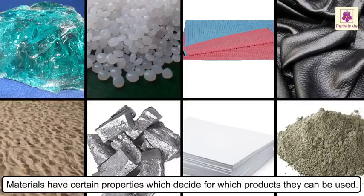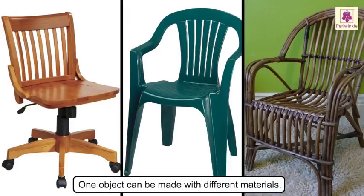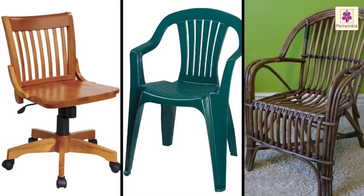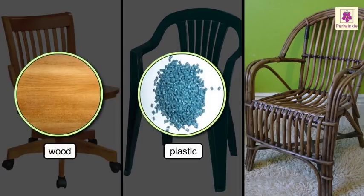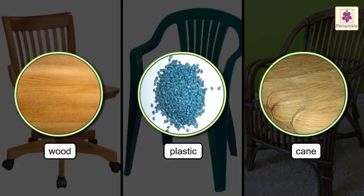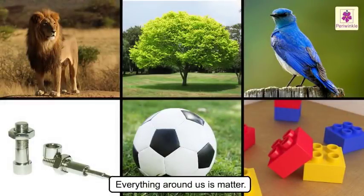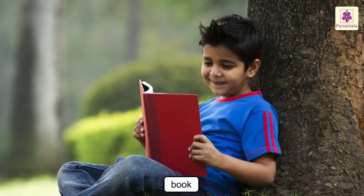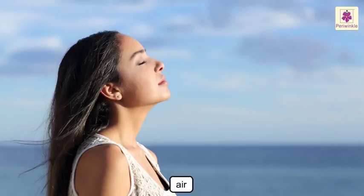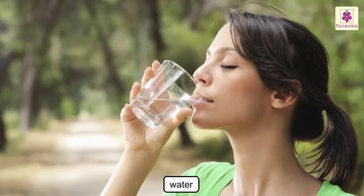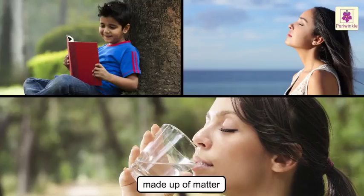Materials have certain properties which decide for which products they can be used. Often one object can be made with different materials — for example, a chair could be made of wood, plastic, or cane. Everything around us is matter; the book that we read, the water that we drink — these are all made up of matter.